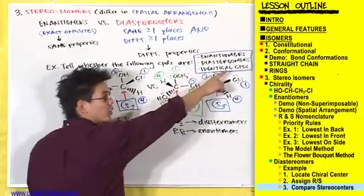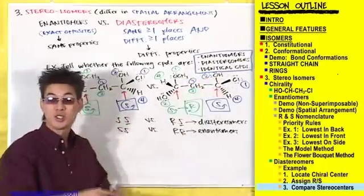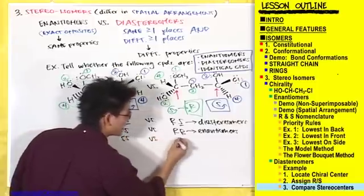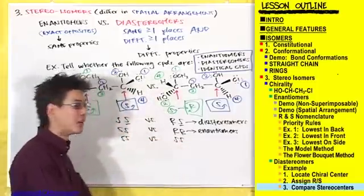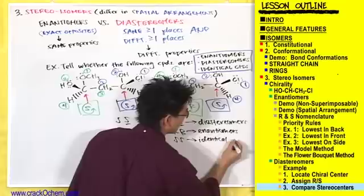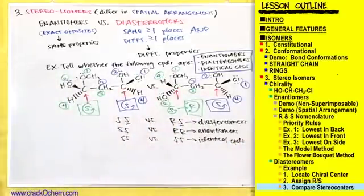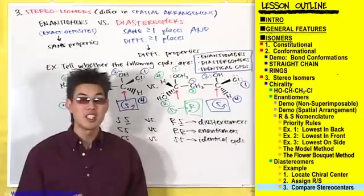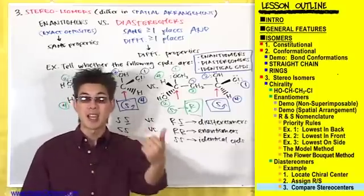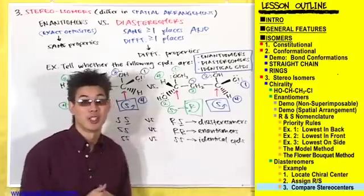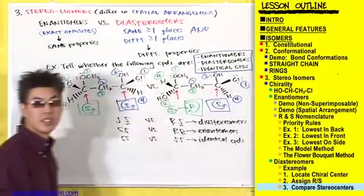Identical compounds will be the same at all stereocenters. For example, if this was SS versus SS, then you'd have the exact same compound — identical compounds. Let's now check out a bunch of different stereocenter combinations to make sure you have the enantiomer, diastereomer, and identical compound distinctions down cold.